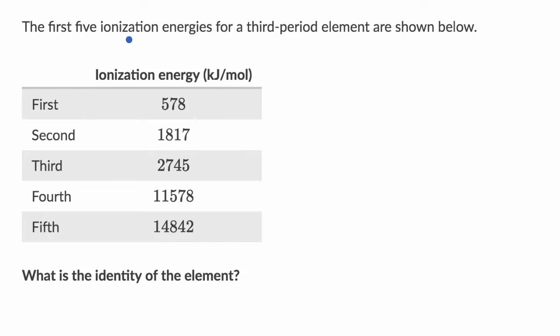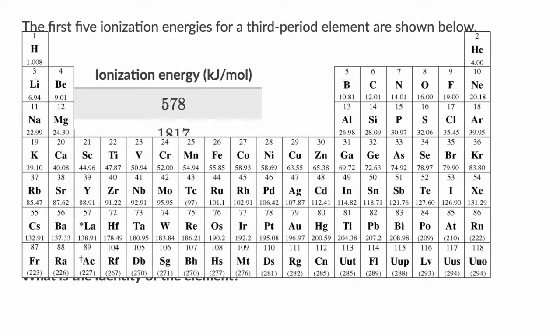We are told that the first five ionization energies for a third period element are shown below. What is the identity of the element? So pause this video and see if you can figure it out on your own, and it'll probably be handy to have a periodic table of elements.